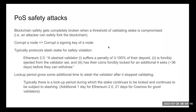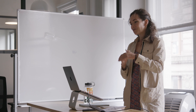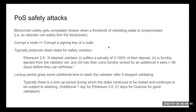Proof-of-stake blockchains are typically proven to be safe when a threshold of validating nodes is honest. When you violate this threshold, you lose safety, and then you can create forks and double-spend on those forks. You break the finality guarantee when the number of Byzantine validators goes over the threshold. When I talk about corrupting a validator, what I mean is corrupting the signing key of that node.